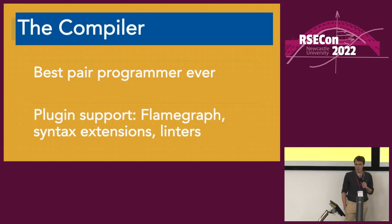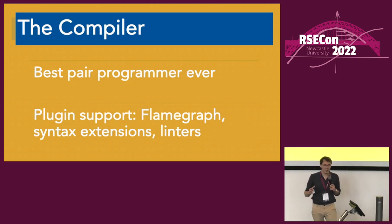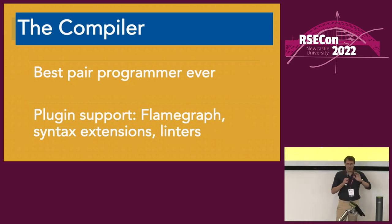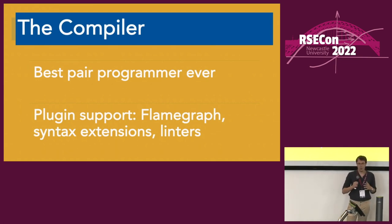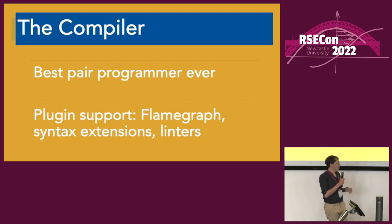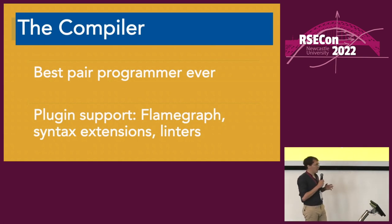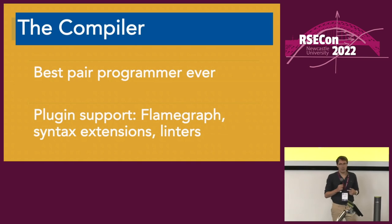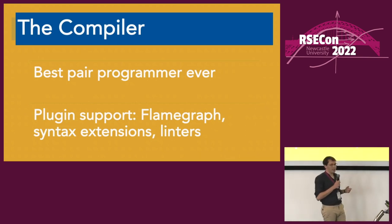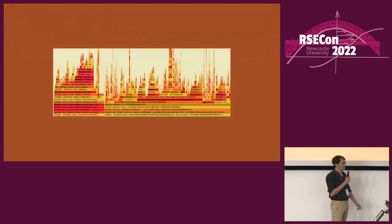The compiler is the best pair programmer ever — it's like having a senior RSE embedded in your computer at all hours. It won't let you get away with bad code, but it will be quite specific about what it doesn't like, which leads you to become a better programmer. You can also check your code without fully compiling it, and there's plugin support out of the box. A particularly nice one is the Flame Graph plugin, which shows where your program spent its time.